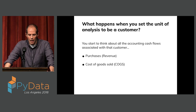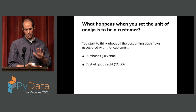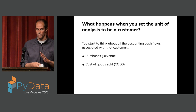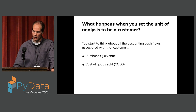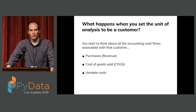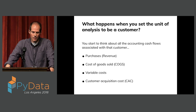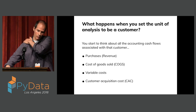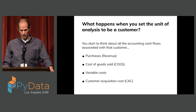It really starts with asking: what happens when you set the unit of analysis to be a customer? You start thinking about all the cash flows associated with those customers. When they purchase with you, you see cash incoming. You're spending money to build or buy what you're selling them — that's referred to as cost of goods sold in accounting. More holistically, you probably have other costs associated with serving that customer, like warehouses or salespeople — those are generally referred to as variable costs. And then you probably spend something upfront to market and acquire new customers — that's customer acquisition cost, apportioned across all customers.